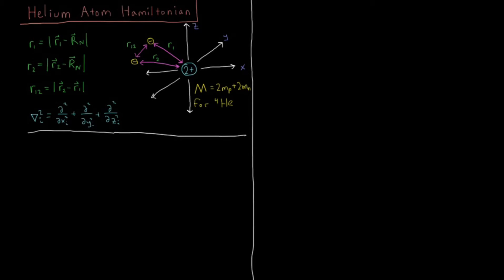Let's now look at the Hamiltonian for the helium atom and see why we can only solve the Schrödinger equation exactly for the hydrogen atom.